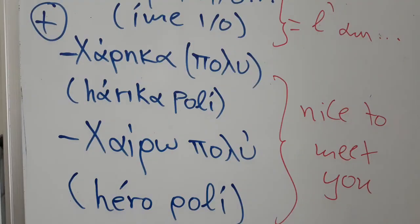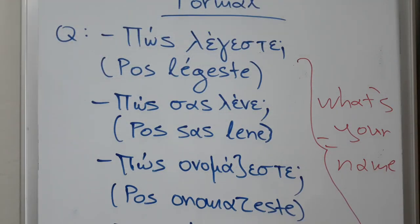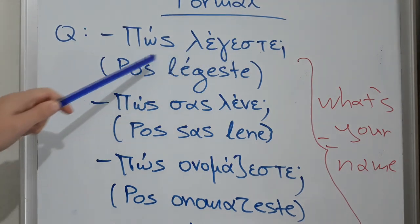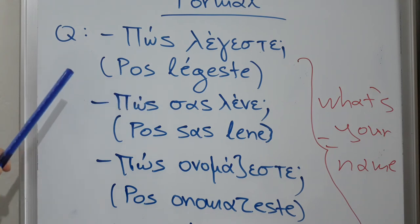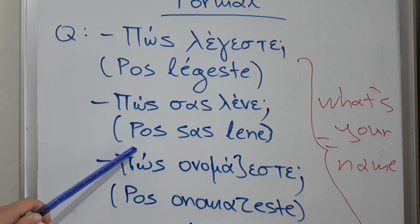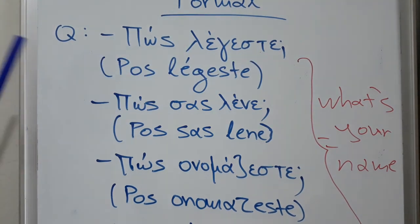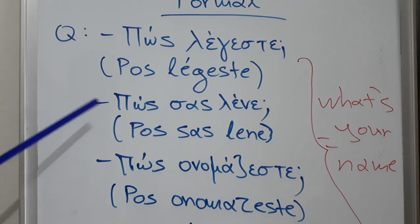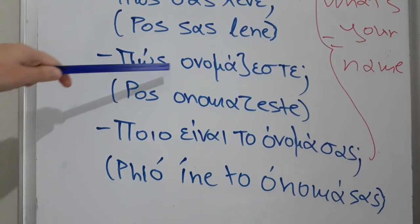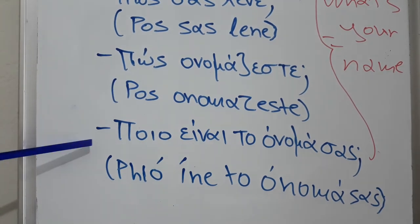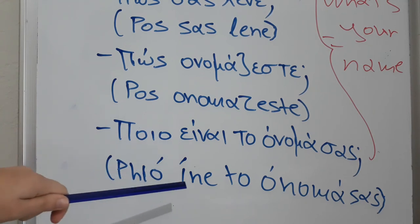Let's proceed to a formal situation. How will you be asked to introduce yourself? Let's see four ways of asking someone to introduce himself in formal situations. The first: πώς λέγεσαι? The second: πώς σας λένε? We use again the verb λέγεσαι; this suffix here denotes the second person plural, and in all these situations we speak in the second person plural.